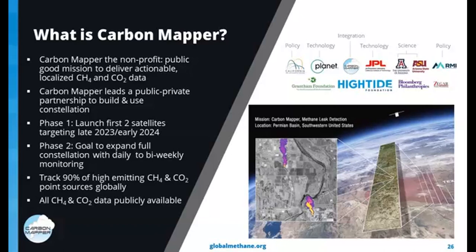To do this work, CarbonMapper leads a unique public-private partnership powered by philanthropy, bringing together expertise across policy, science, and technology. It includes partners at NASA Jet Propulsion Laboratory, the commercial company Planet Labs, the California Air Resources Board, as well as RMI, among many others. One of the main goals of the coalition is to develop and deploy a constellation of methane-detecting satellites. Right now, they're working to launch two satellites by later this year and early next, with the ultimate goal of expanding those capabilities for more frequent measurement and monitoring. They also conduct a number of aerial methane surveys using a similar instrument, currently focused on the U.S. and Canada, with a campaign currently underway in South America.